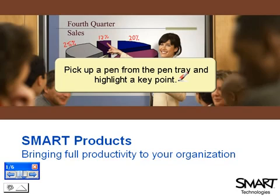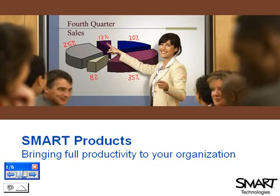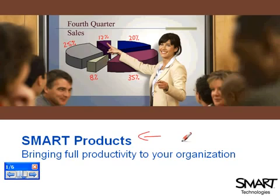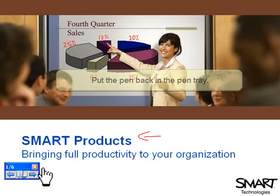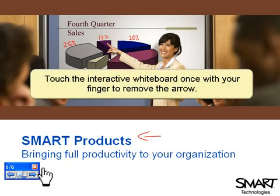Pick up a pen from the pen tray and highlight a key point. Put the pen back in the pen tray. Touch the Interactive Whiteboard once with your finger to remove the arrow.